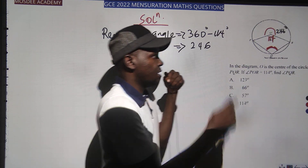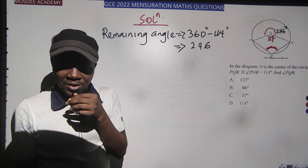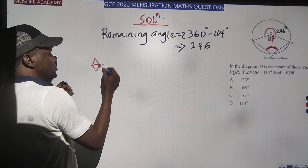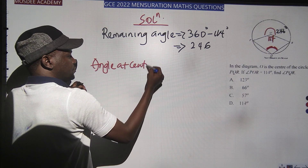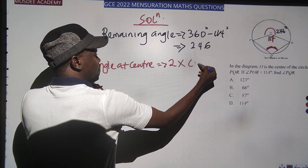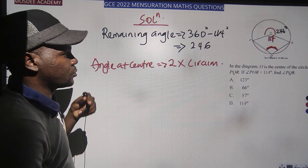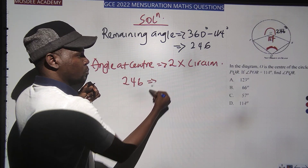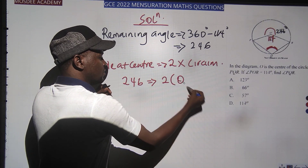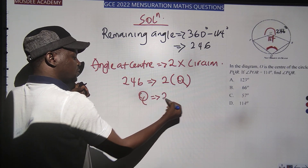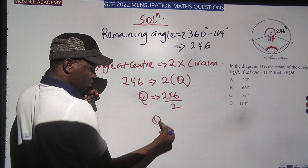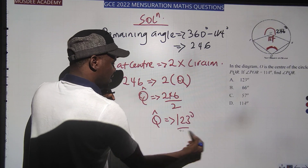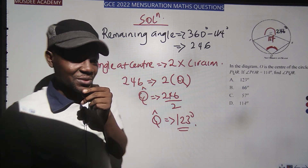The angle at the center is 246°. Using the theorem — angle at center equals 2 times the circumference angle — we are looking for Q, which is at the circumference. So 246 = 2 times Q, meaning Q = 246 ÷ 2. Working that out: 2 twos are 1, between 4s are 2, and this gives 123°. That is the answer.